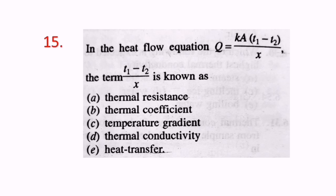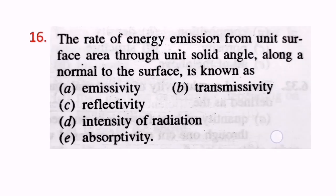Question 15: In the heat flow equation Q = K·A·(T1−T2)/X, the term (T1−T2)/X is known as the temperature gradient. Question 16: The rate of energy emission from unit surface area through unit solid angle along a normal to the surface is known as intensity of radiation. D is the correct answer.